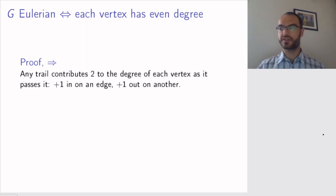We want to prove an equivalence. We want to prove that a graph G is Eulerian if and only if each vertex has even degree.